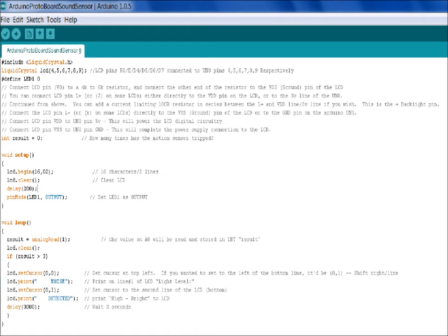If the result is higher than 3, we set the cursor to the upper left of the LCD and print noise on the first line. Then we set the cursor to the lower left hand line and print detected. Then wait 3 seconds and go back to the beginning of void loop.